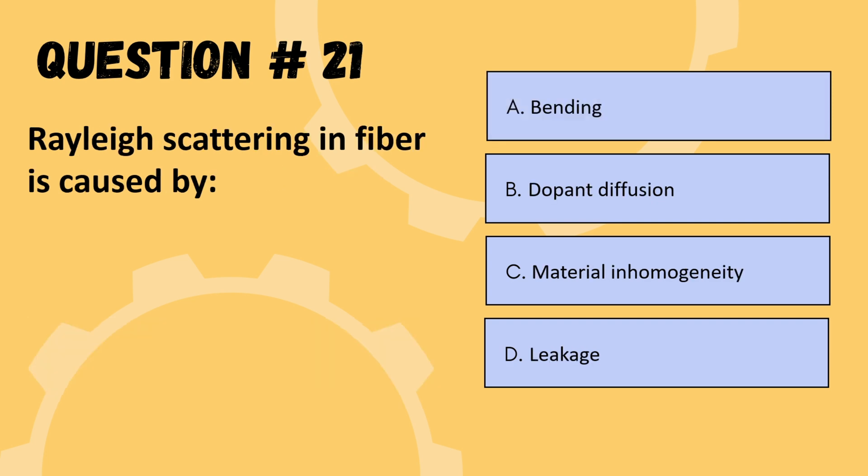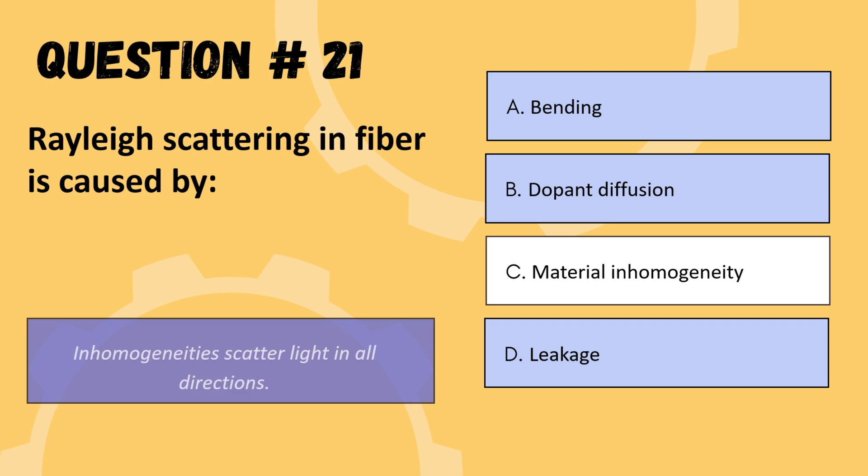Next question: Rayleigh scattering in fiber is caused by — options are bending, dopant diffusion, material inhomogeneity, or leakage. The correct option is C: material inhomogeneity.